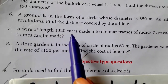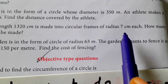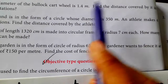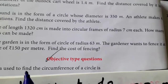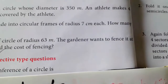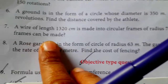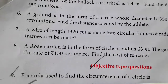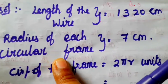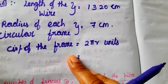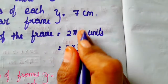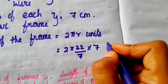Problem 7: a wire of length 1320 centimeter is made into circular frames of radius 7 centimeter each. How many frames can be made? Length of the wire is 1320 centimeter. Radius of each circular frame is 7 centimeter. Circumference of each frame = 2 pi r = 2 into 22/7 into 7. Cancel the 7s, then 2 into 22 = 44 centimeter.